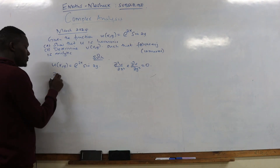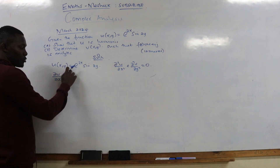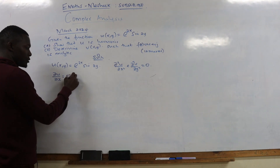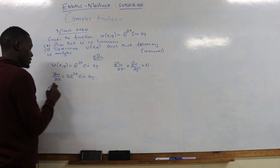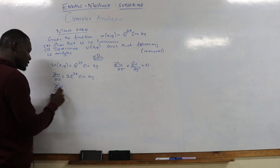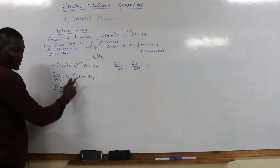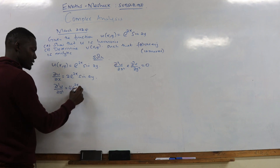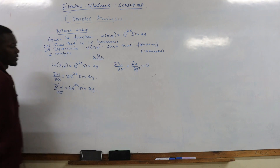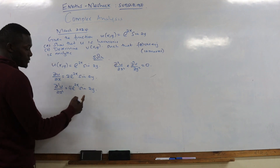Remember these are partial derivatives. Differentiating u with respect to x: we get 2e^(2x) sine(2y). Differentiating again with respect to x, we drop the 2 again and get d²u/dx² = 4e^(2x) sine(2y).